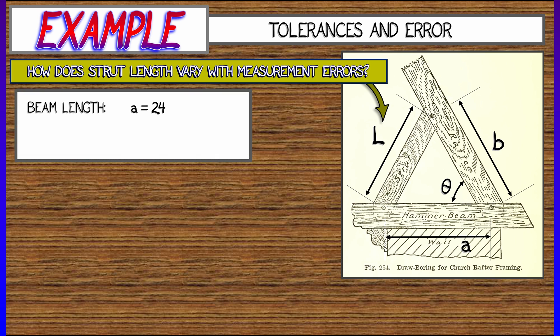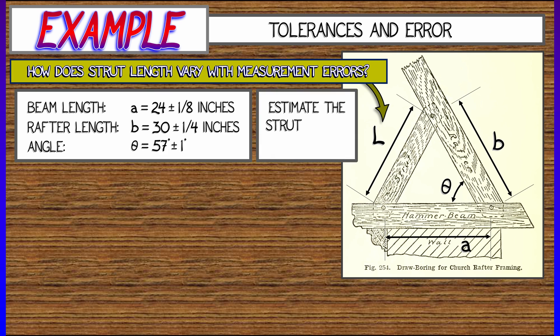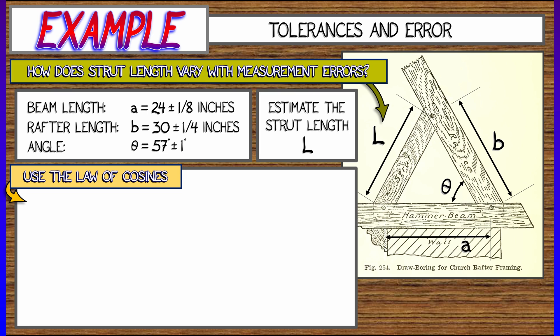Okay, so I've got a base beam of length A and a rafter of length B. They are joined together at an angle theta and held up by a strut of length L, capital L. Now, let's say that I know the base beam length A is 24 inches. The rafter length B is 30 inches. They're at an angle of 57 degrees. But these are only good up to certain tolerances. I know A up to an eighth of an inch. I know B up to a quarter of an inch. And I know theta up to one degree. The question is, what is the length of the strut L? And how good is our estimate? How confident is our estimate? What's the tolerance on that?